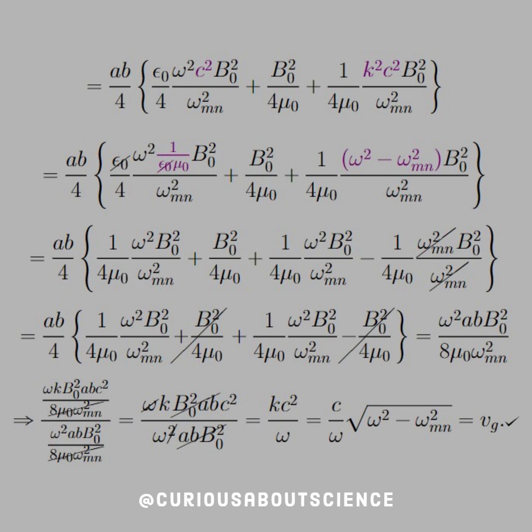We have an AB times B not squared canceling. And so all of this leaves us with Kc squared over omega.